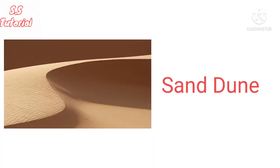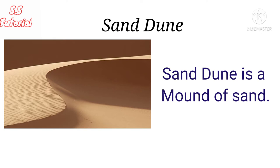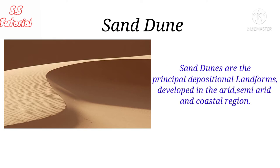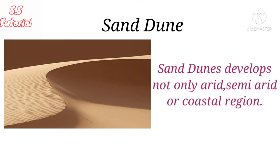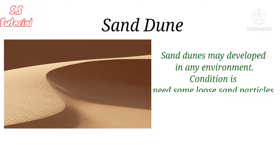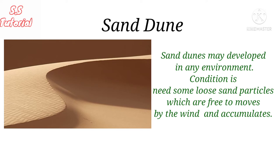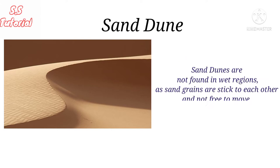Let's know about sand dunes. A sand dune is nothing but a mound of sand, which is a principal depositional landform made by wind in the arid, semi-arid, and coastal regions. Most people think that sand dunes develop only in arid, semi-arid, or coastal regions, but they can develop in any environment in which loose particles of sand are exposed to wind action and are free to migrate and accumulate. Generally, sand dunes are not found in wet environments, as sand grains stick to each other and are not easily moved by wind.